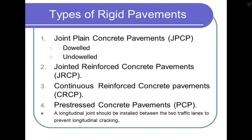Next, rigid pavement types. The types are jointed plain concrete pavement (JPCP) and jointed reinforced concrete pavement (JRCP). There are four types of rigid pavements. First is doweled and undoweled. Doweled and there is a lot of load transfer. JPCP is PCC provided by joints. Joint spacing is 5 to 10 meters. There are dowel bars and there is a lot of load transfer.